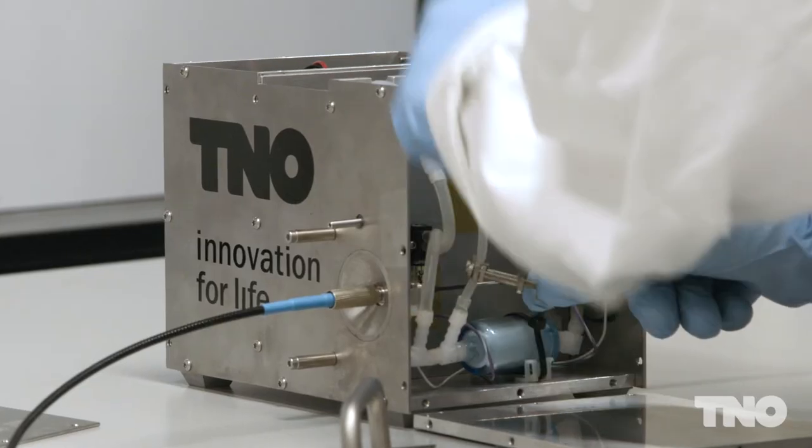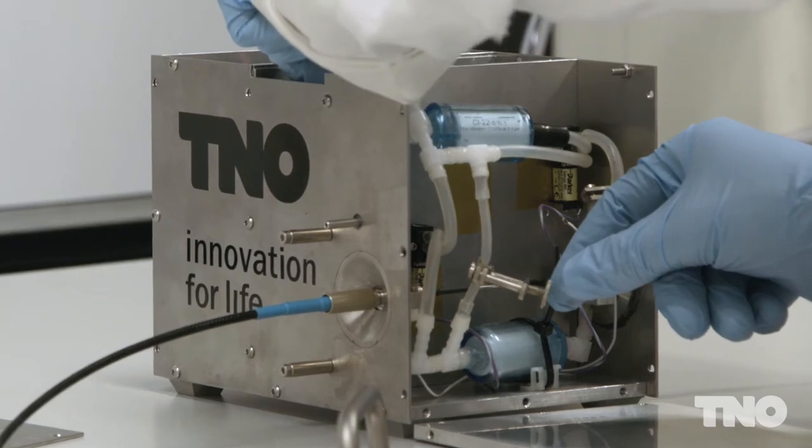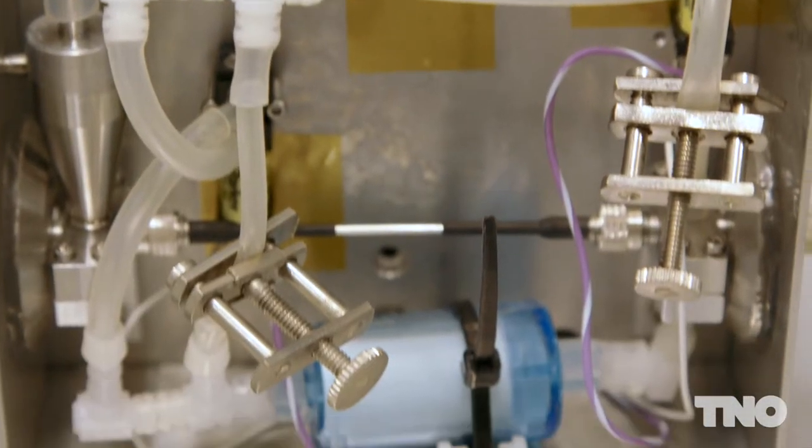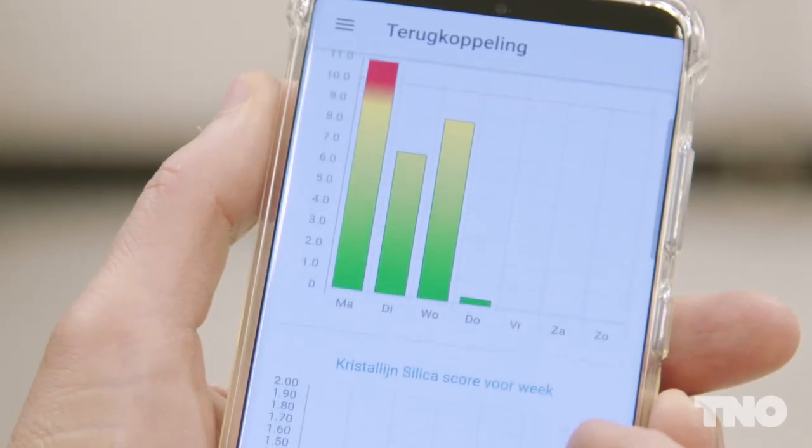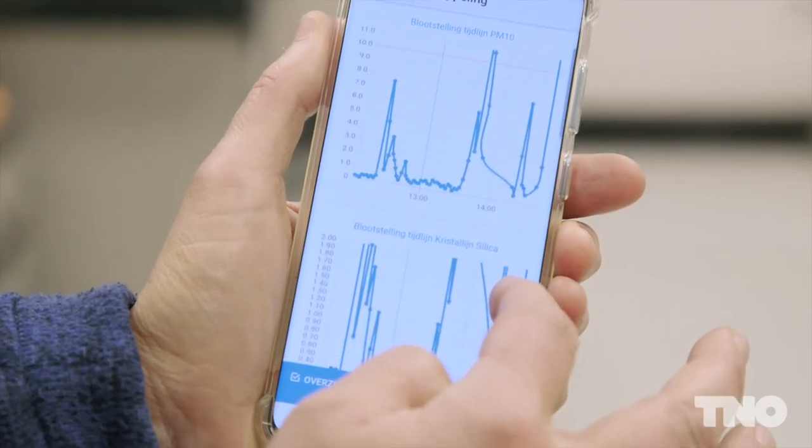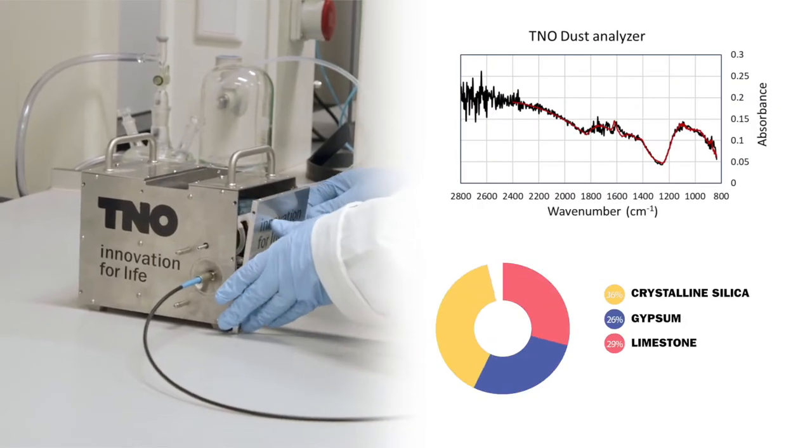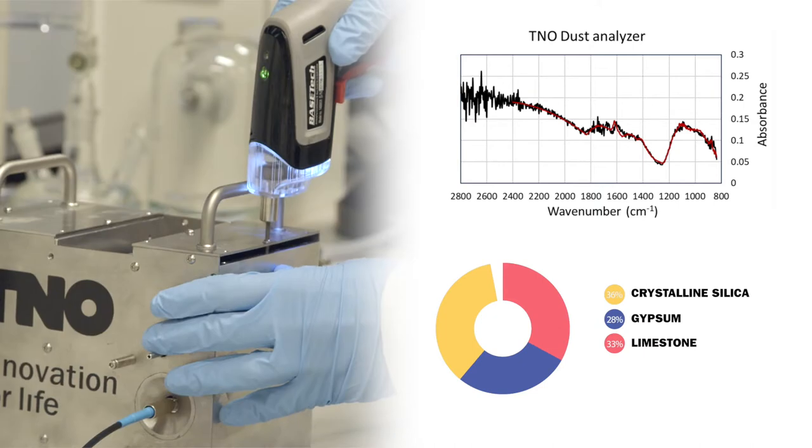Knowing the exact composition in real time offers better possibilities to protect workers. That's why TNO developed a portable device that uses optical spectroscopy to identify dust composition, in this specific case crystalline silica content. The device can measure dust composition in near real time.